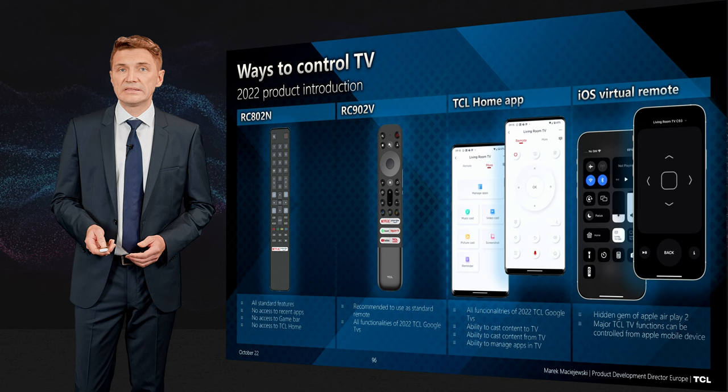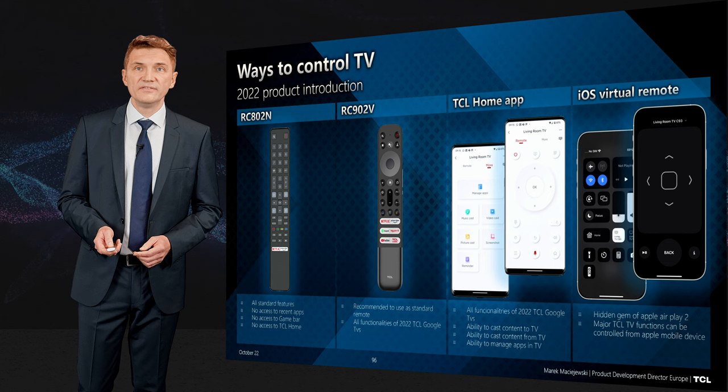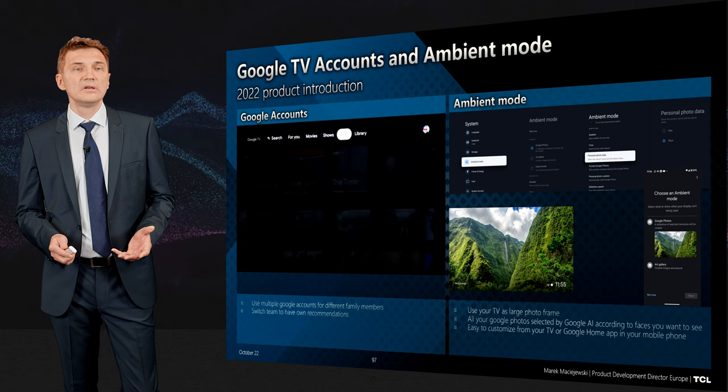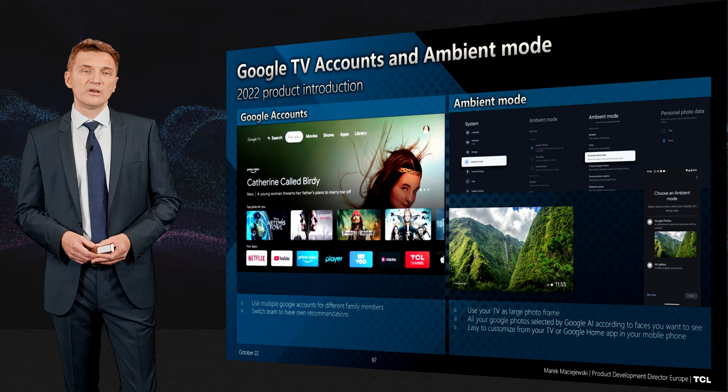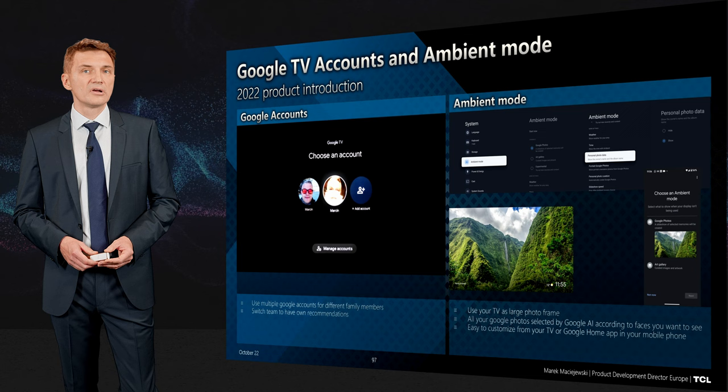It's not only the new remote control you can use — you can also use the standard basic remote with digital buttons, the TCL Home application, or an iOS device. Many people still don't know that via Apple AirPlay 2 you can fully control the TV set. Another important feature this year is Google accounts and profiles, so you can quickly switch between profiles. Kids can have their own profile, so their viewing does not appear in your recommendations.